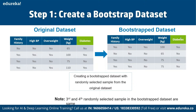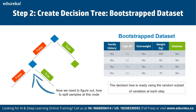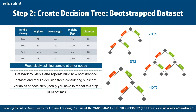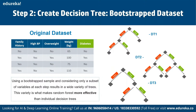We then create a decision tree using the bootstrap data set — for example, using blood circulation as the root node. Instead of considering all four variables to determine splits, we consider only a random subset of variables at each step, such as blood circulation and blood arteries. The decision tree is built based on this subset of variables at each step. We then go back to step one and repeat: build a new bootstrap data set and rebuild decision trees considering a subset of variables at each step, ideally repeating this process hundreds of times.